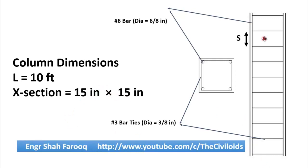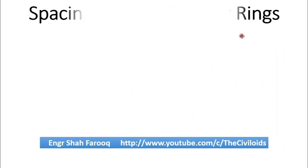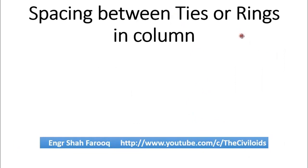To find the spacing between two ties or rings in the column, we will use the ACI 318 method. According to ACI 318, spacing between ties or rings in a column can be determined using the following three equations.